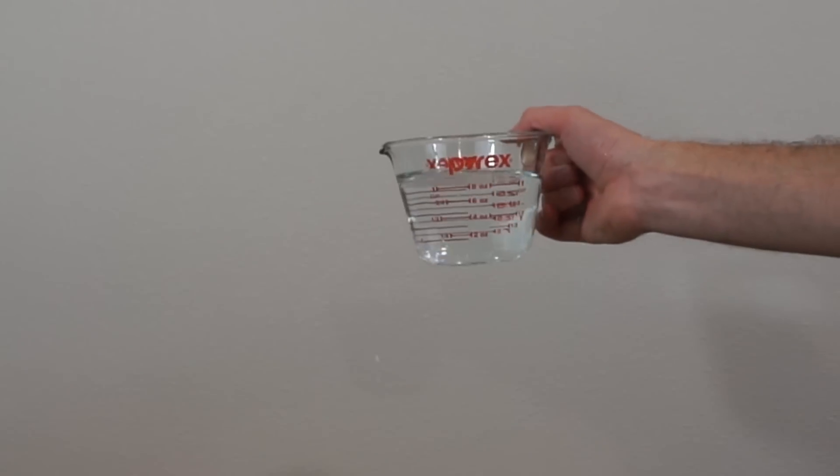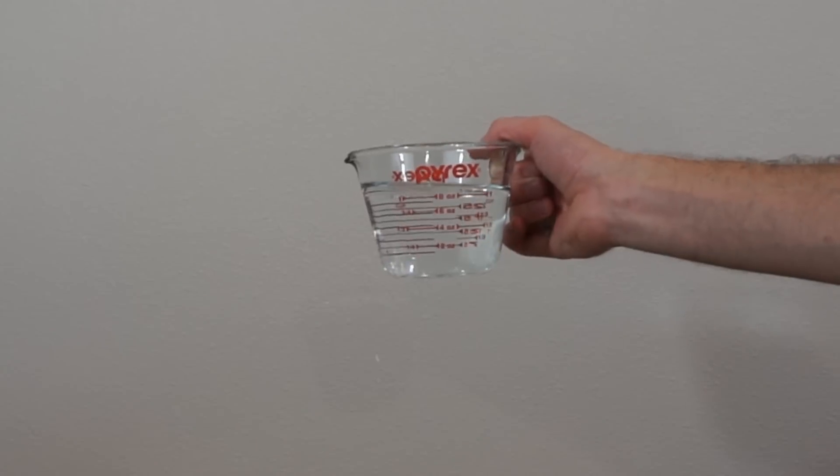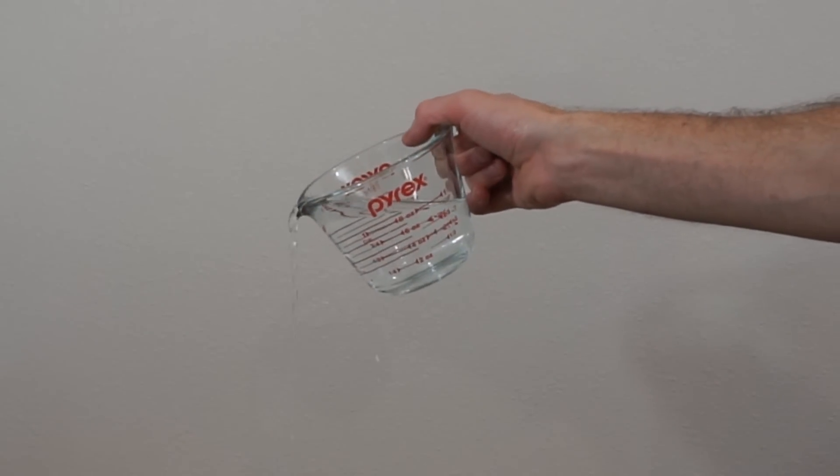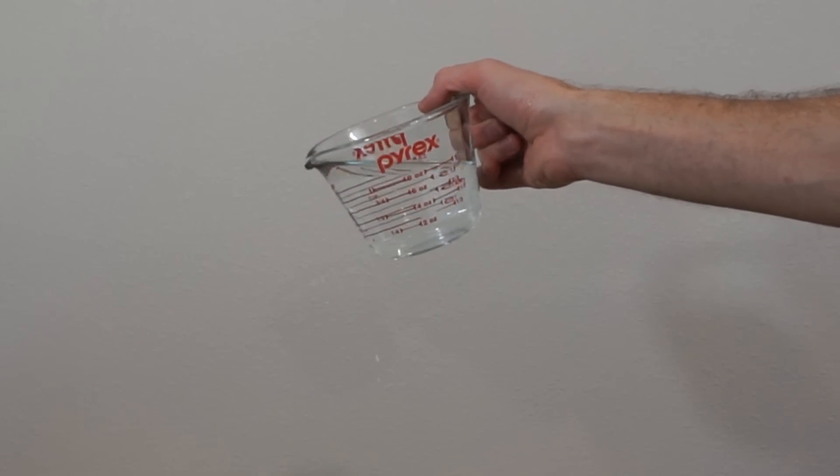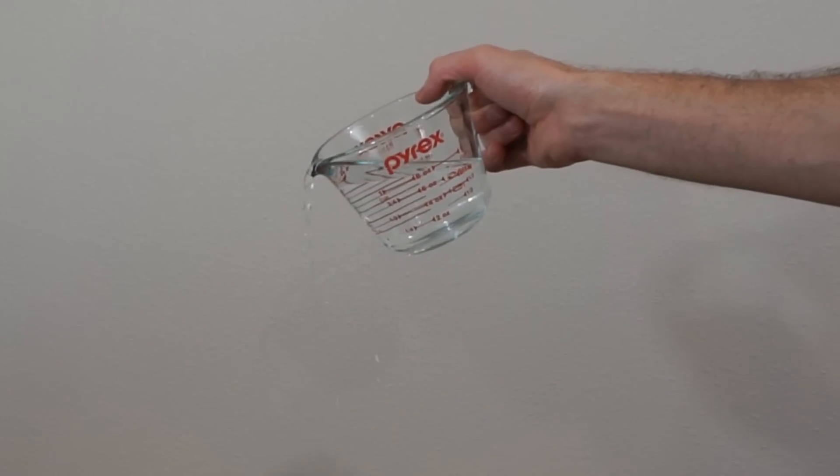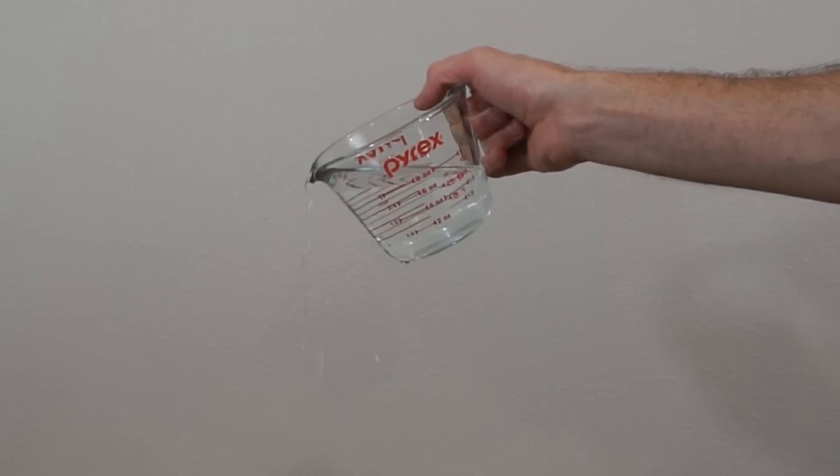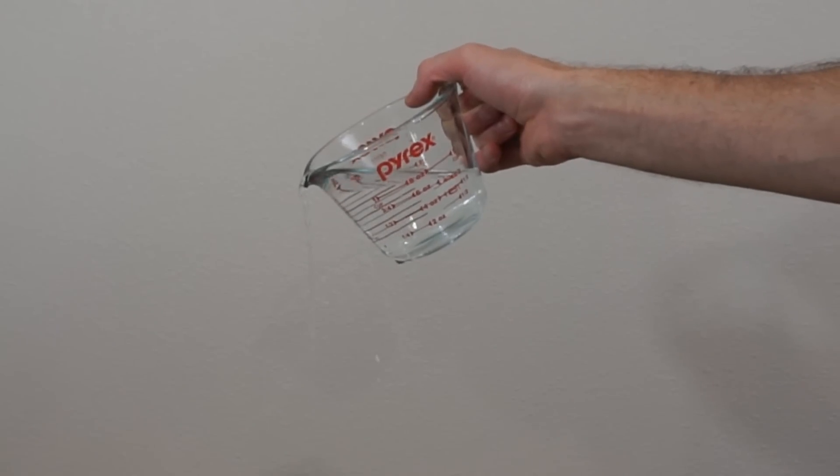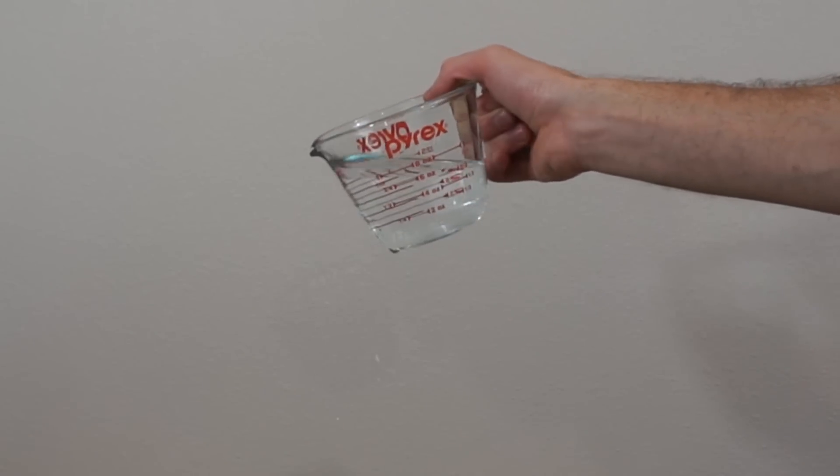So normally what happens if you pour a liquid out like water, you start pouring, you tilt it back up, it stops. It stays about the same level, it obviously doesn't keep pouring out when you pour it.